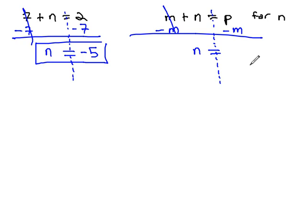On the right side, we have the subtraction problem p minus m. They are not like terms, so they cannot be combined, so we'll simply write it as p minus m. Our goal, however, was to get the n alone in the problem. We have done that, n is equal to p minus m.